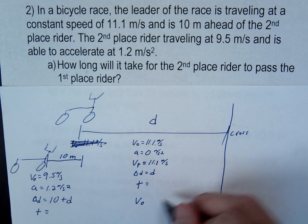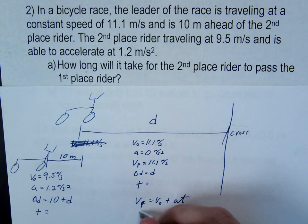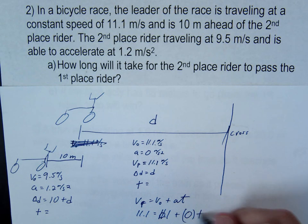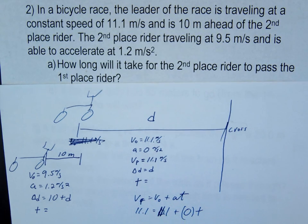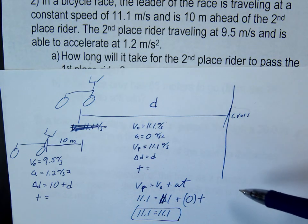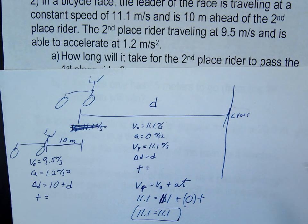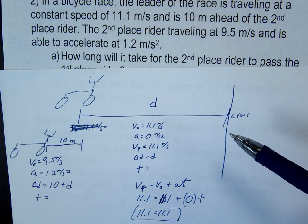So this would use v final equals v initial plus at. 11.1 equals 11.1 plus 0 times t. So what happened? Our answer is 11.1 equals 11.1, which is a true statement, but is not what we're looking for. Whenever that 0 multiplies by t, it's going to mess us up. So this is one of those few times where it's not enough. 3 is not enough.